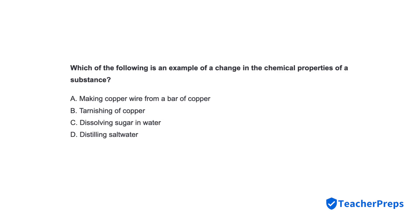Which of the following is an example of a change in the chemical properties of a substance? Correct response is letter B, tarnishing of copper.